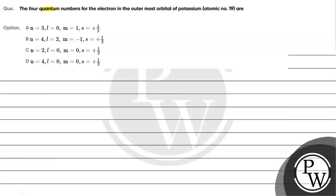Let's read this question. The question asks for four quantum numbers for the electron in the outermost orbital of potassium.